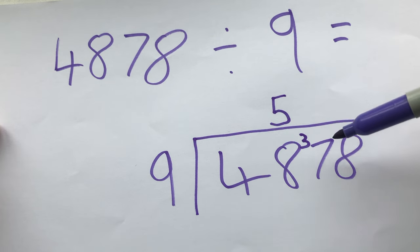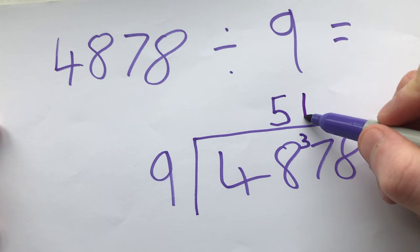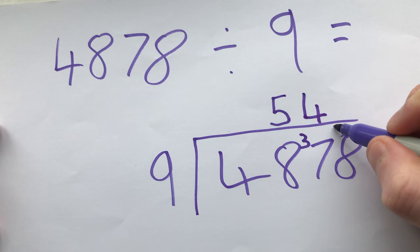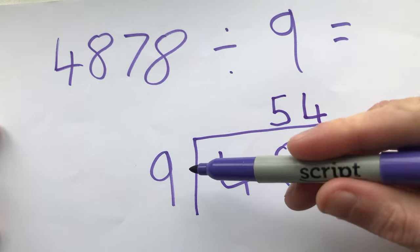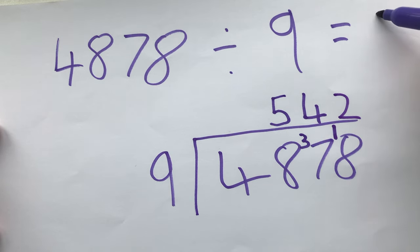Now how many 9s going to 37? Again we use our times tables it will tell us that there are 4 9s that just fit in there because 4 9s are 36 and the number that we've got left is 1. 36 and 37 the difference is 1. Carry that over. How many 9s go into 18? That's exactly 2. So the answer is 542.